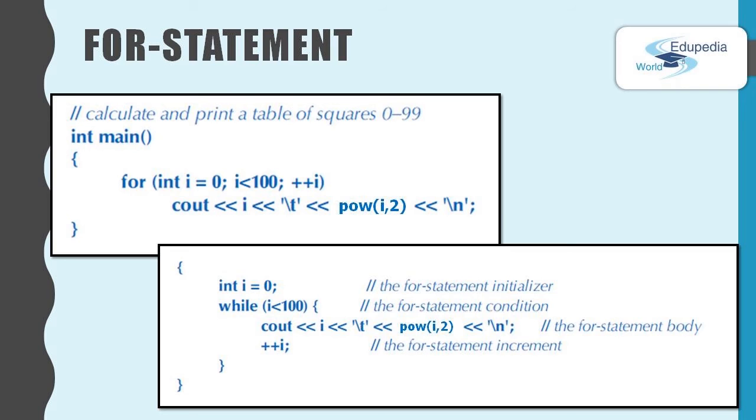As the value of i is 0, 0 is less than 100. Therefore you can go inside of the for loop code block. So it will print out the cout and then goes to the increment part.